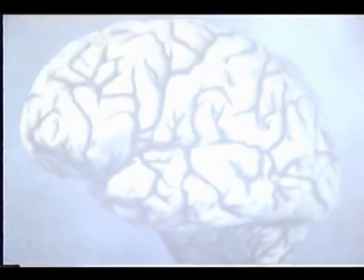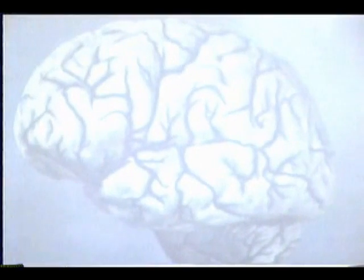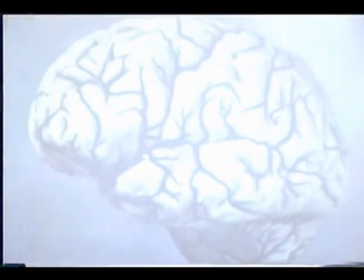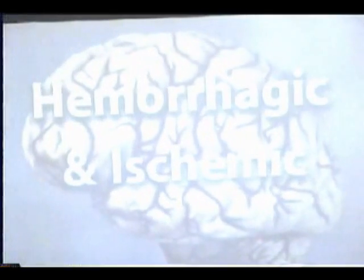A stroke, also called brain attack or cerebral vascular accident, occurs when brain cells die from oxygen deprivation. Oxygen deprivation occurs if blood flow to the brain is blocked by a clot or vessel damage. Without oxygen, brain cells cannot function.